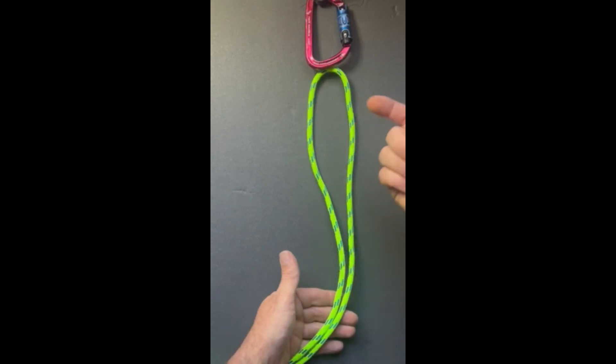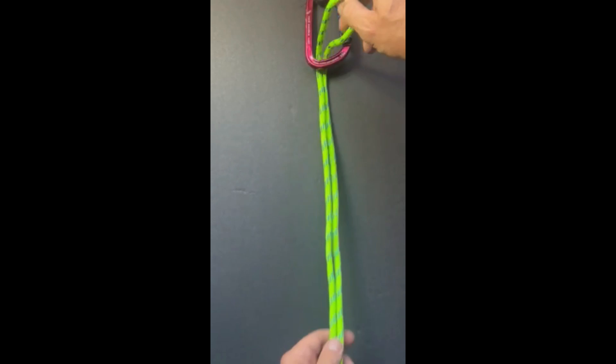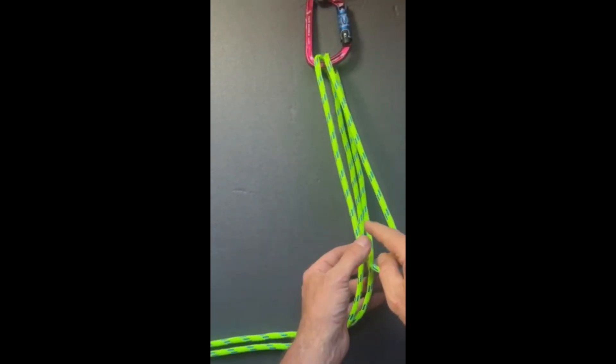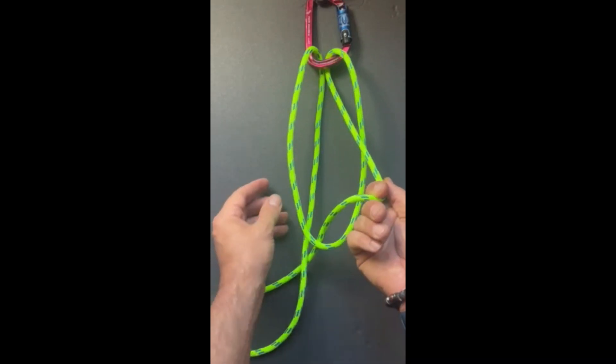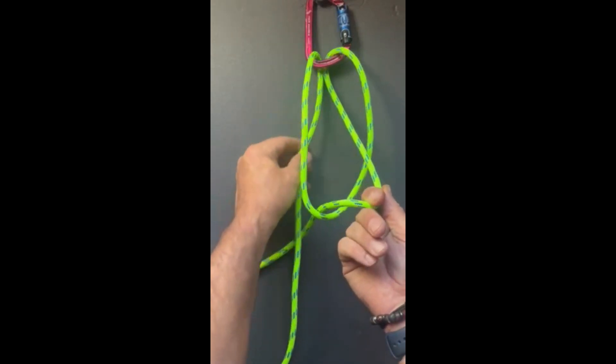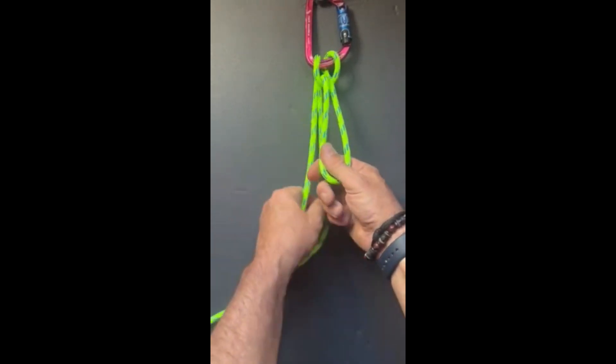Start out with a bite. Take that bite and pass it through the anchor. Bring that bite across the two legs of rope and grab one. It doesn't matter which one you grab, but grab that opposite one and pull it tight. You can see it creates a basket when you do that.